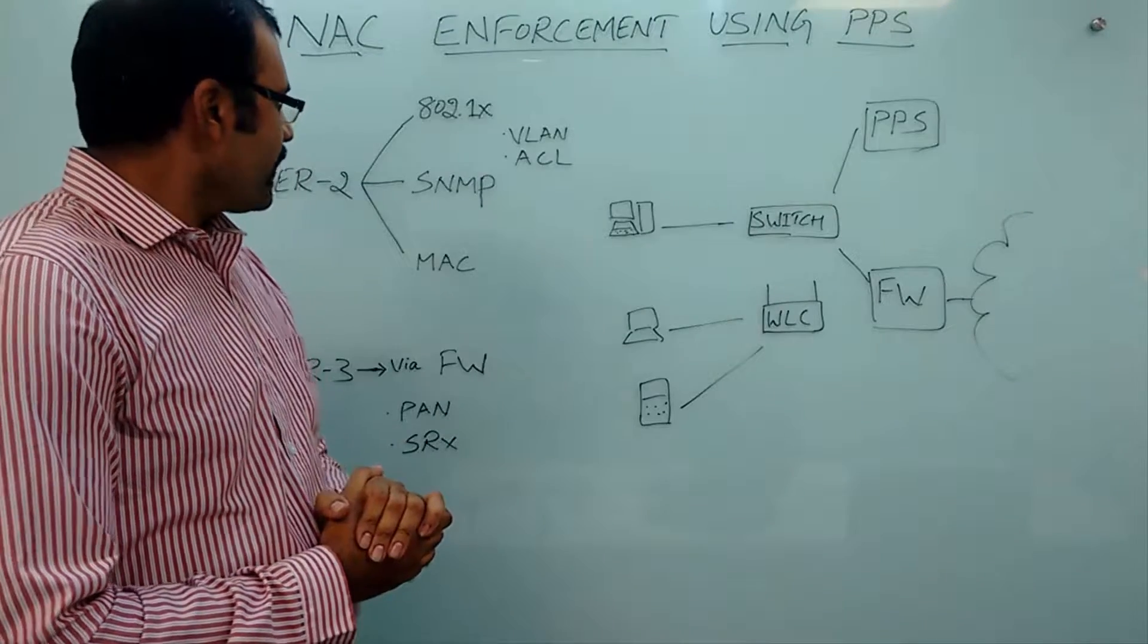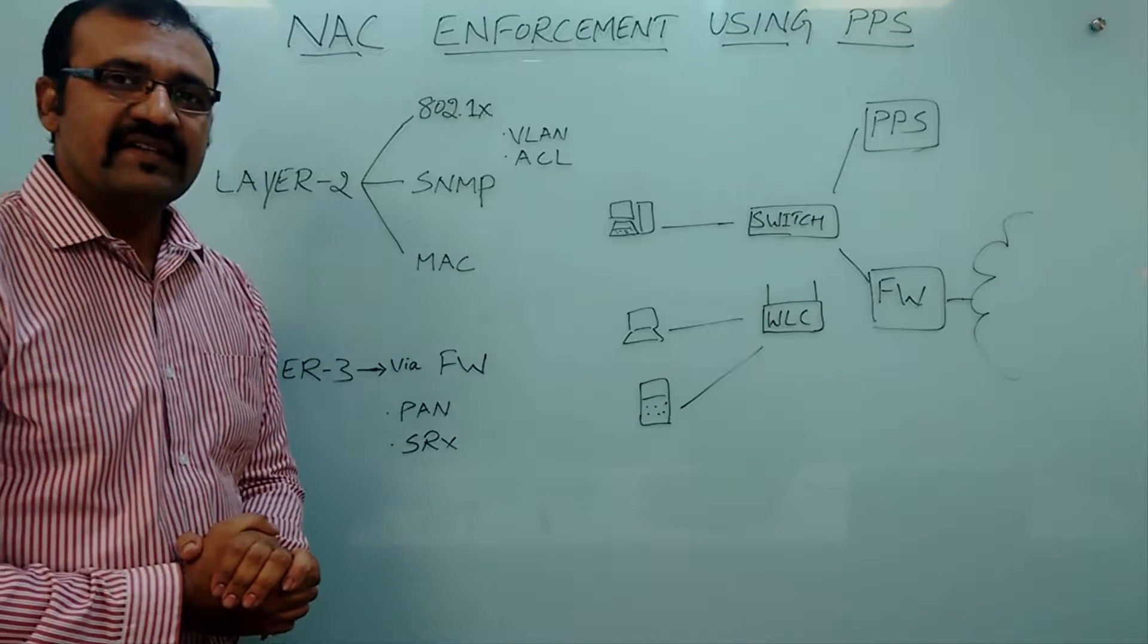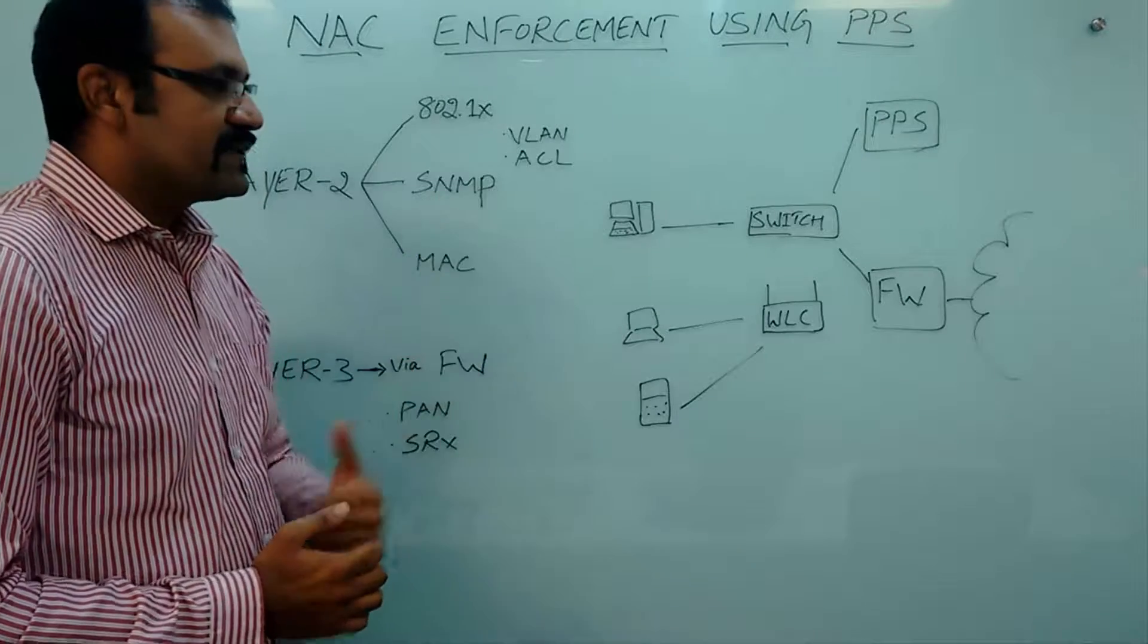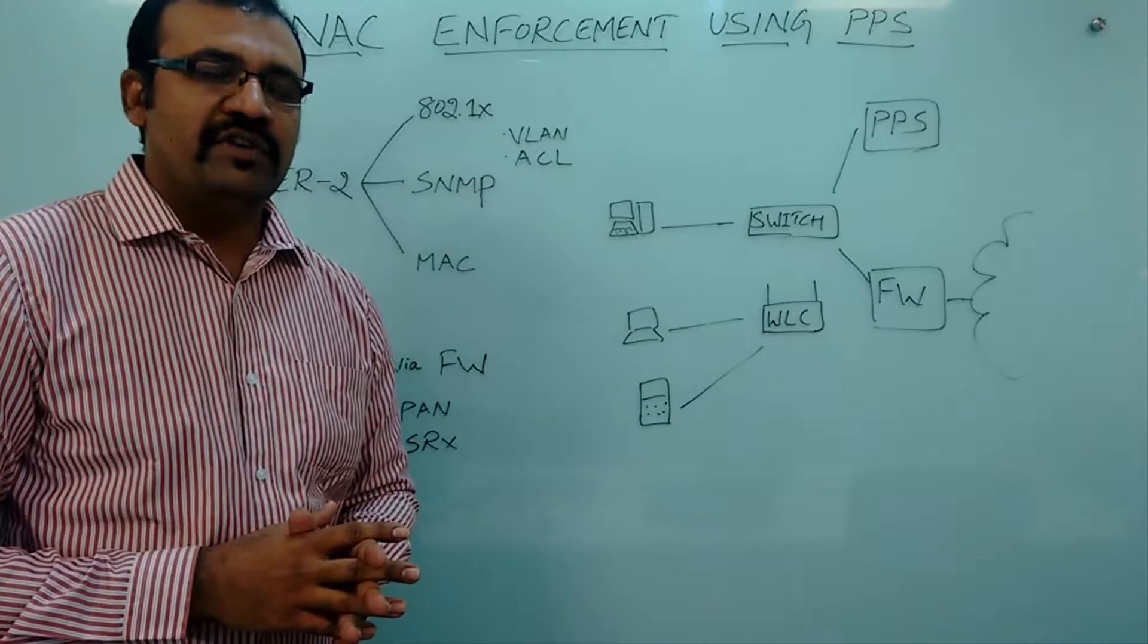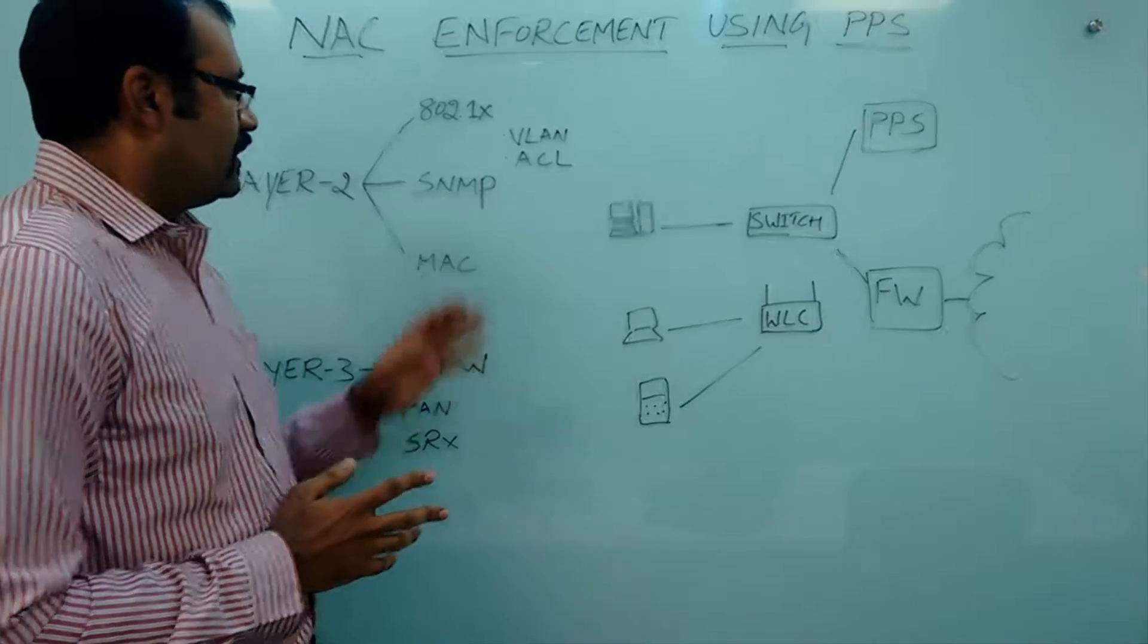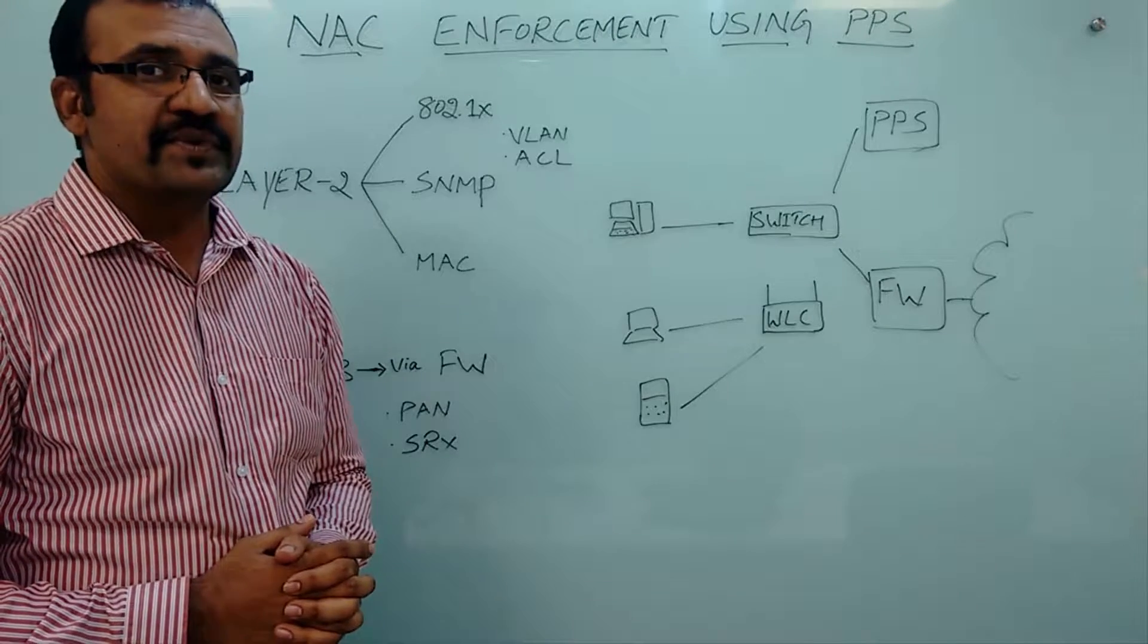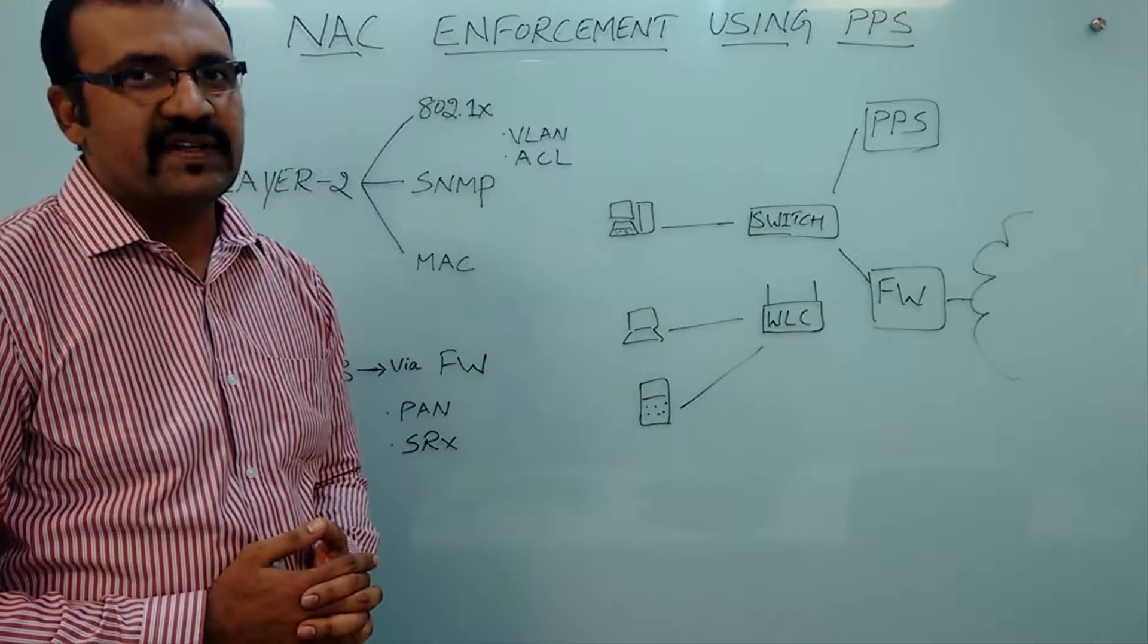The second layer 2 enforcement method is SNMP protocol. This is one of the simplest and easiest methods of applying policy enforcement on endpoints. This helps especially where endpoints do not support 802.1x. The PPS SNMP server will be configured on the switch, which makes use of SNMP traps, link up, link down, and MAC notification traps in order to apply security policies on endpoints.